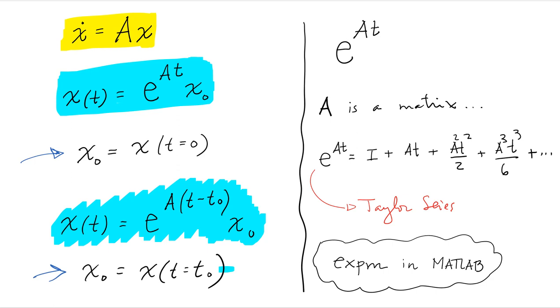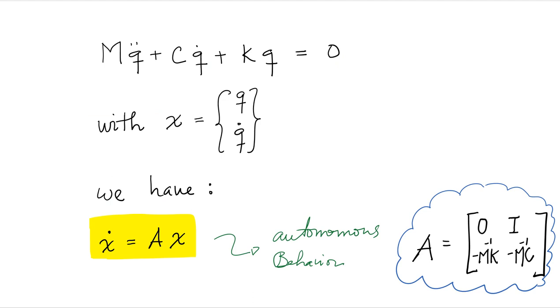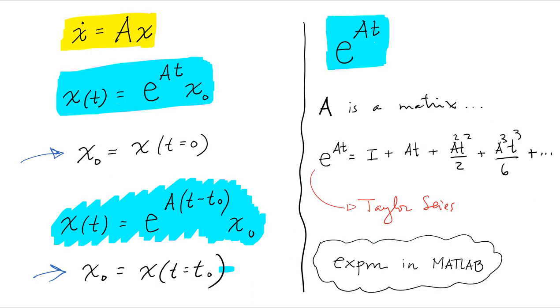Keep in mind that we are dealing with a somewhat of a new quantity here, e to the AT. So this is the exponential of a matrix. Remember, we define our A matrix here. And so this is the exponential of a matrix. How do you take the exponential of a matrix?